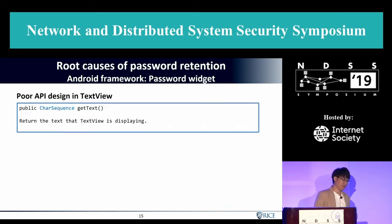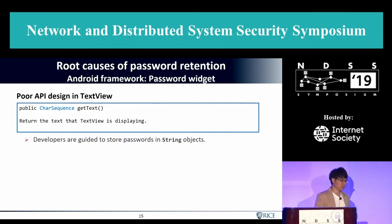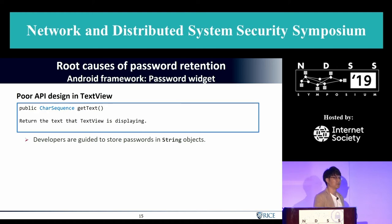Another bad example is poor API design. There is a getText() API that returns the password to the developer as a CharSequence, which is essentially a String. Developers are therefore guided to store passwords in String objects. This is bad.